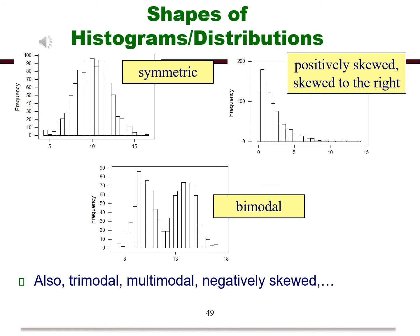Finally, the bottom graph we consider bimodal. This means that we have two peaks. There are many other typical shapes. These could be negatively skewed or skewed to the left, trimodal, etc.